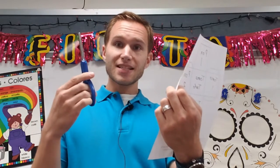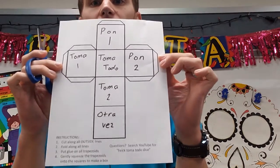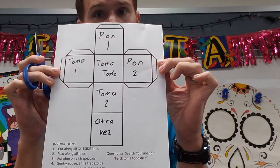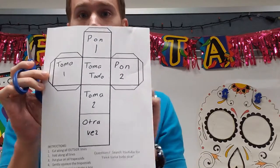So, on my directions it says cut along all outside lines. So, con mis tijeras, I'm going to cut along all the outside lines. Do not cut any lines off. You want the trapezoids and the squares. Let's cut.